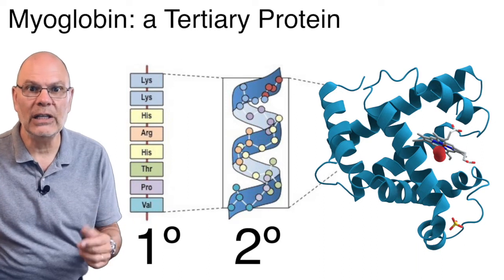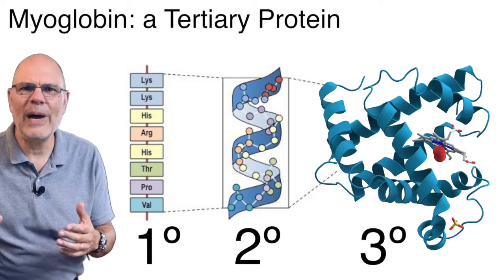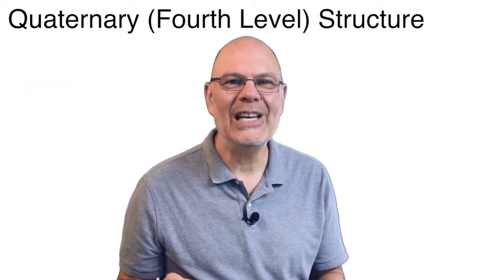which led to these alpha helices, a secondary structure, and these bends and turns caused by tertiary interactions. For many proteins, that's it. But for some proteins,